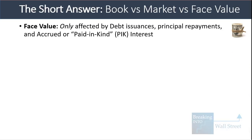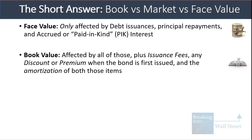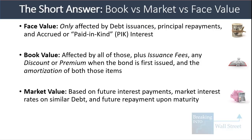The face value of a bond is only affected by debt issuances, principal repayments, and any accrued or paid-in-kind interest that accrues to the loan principal rather than being paid in cash. The book value is also affected by all those, but additionally by issuance fees when the bond is first issued, any discount or premium at issuance, and the amortization of both those items over time.